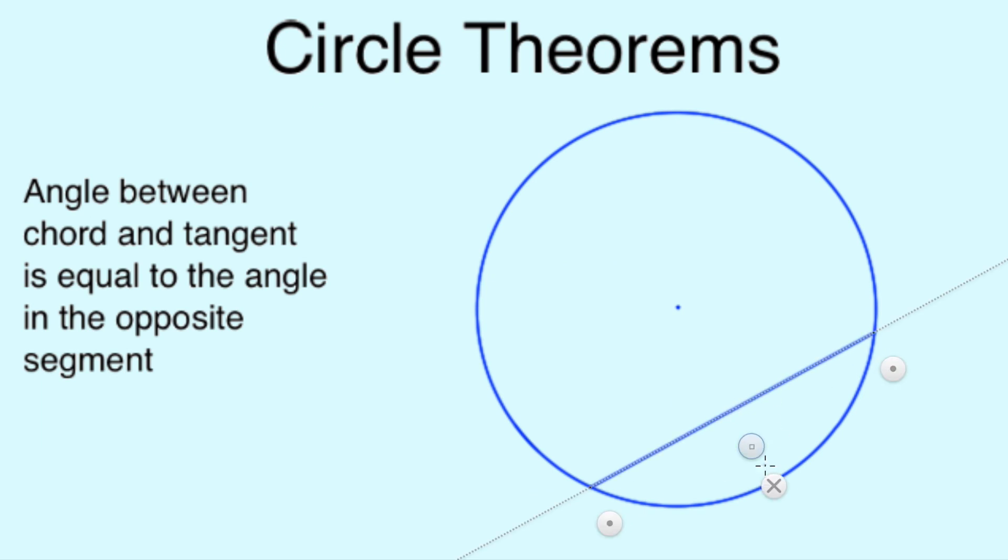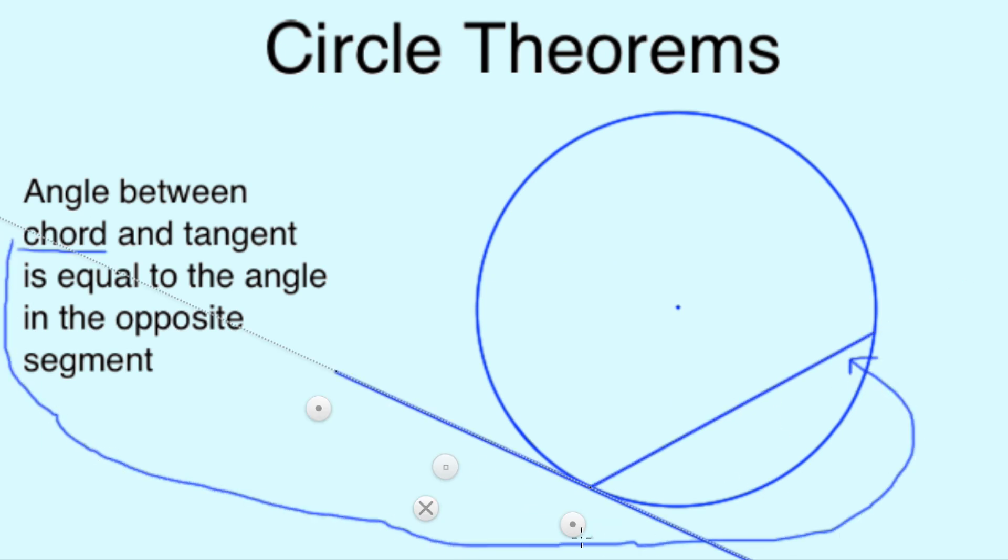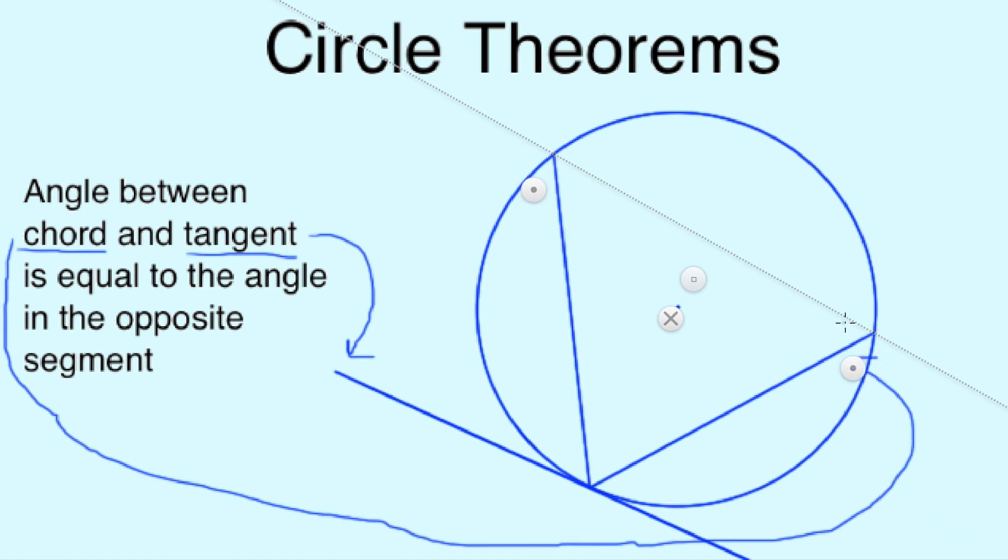Finally, and perhaps the most difficult rule to remember, if we have a tangent with a chord touching it, then draw a triangle within the circle using either end of the same chord, creating an opposite segment, then our opposite segment angle will always be equal to the angle between the chord and the tangent.